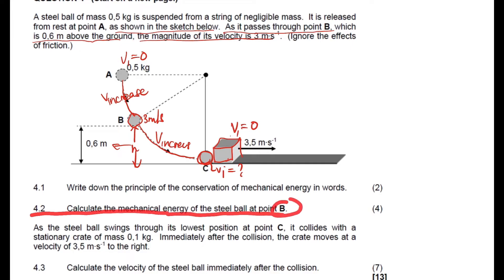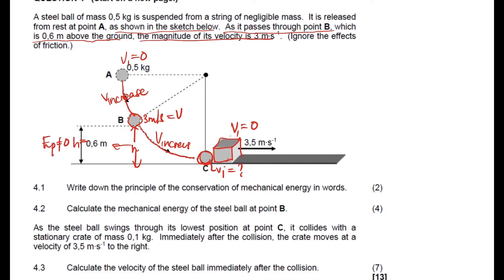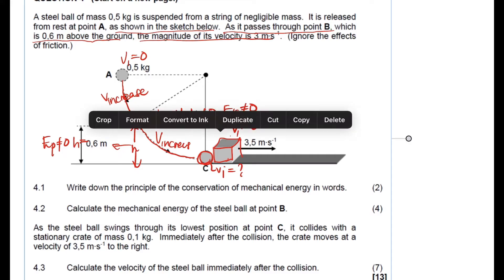Question 4.2 says: calculate the mechanical energy of the steel ball at point B. One important thing to note: at point B, there is a velocity of 3 meters per second and there is a height of 0.6 meters. That means the gravitational potential energy is not zero and the kinetic energy is not zero, so we must include both.